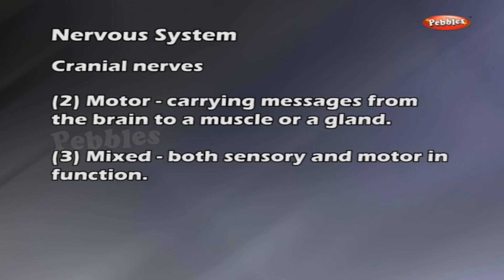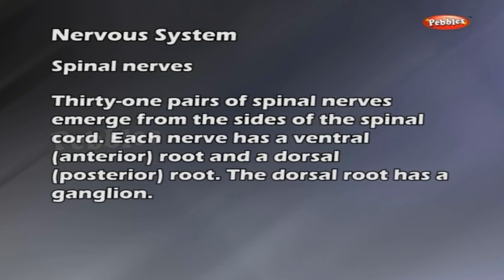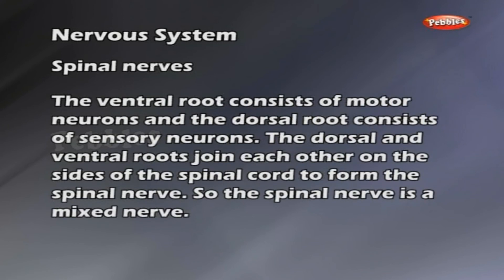31 pairs of spinal nerves emerge from the sides of the spinal cord. Each nerve has a ventral (anterior) root and a dorsal (posterior) root. The dorsal root has a ganglion. The ventral root consists of motor neurons and the dorsal root consists of sensory neurons. The dorsal and ventral roots join each other on the sides of the spinal cord to form the spinal nerve. So, the spinal nerve is a mixed nerve.